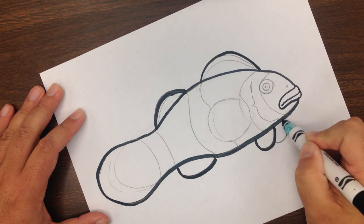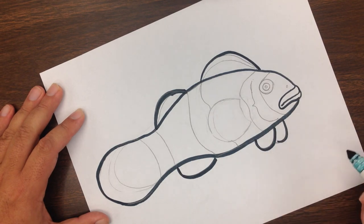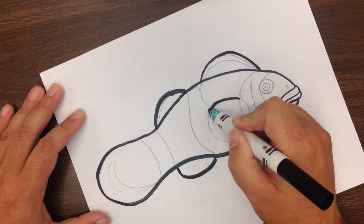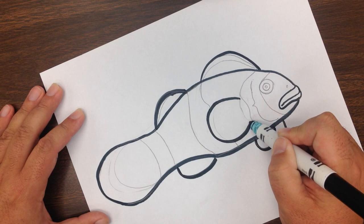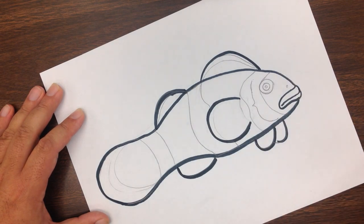Two fins underneath. And then, like most fish, they have this fin just behind the gills here. Okay? So those are the fins.